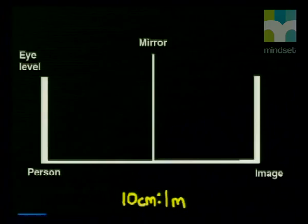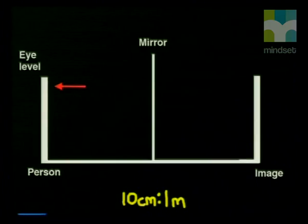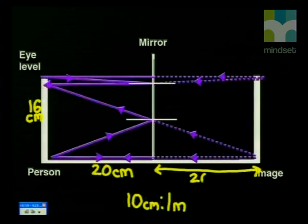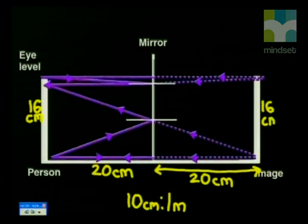Are you beginning to understand how the image in a mirror is formed? Is the image the same size as the object? To answer this, we draw a scale diagram using the scale 10 centimeters equals 1 meter. The person is 1.6 meters tall, so the figure is 16 centimeters tall. The person stands 2 meters from the mirror, so the figure is placed 20 centimeters from the mirror. The image forms 20 centimeters behind the mirror and is 16 centimeters tall.